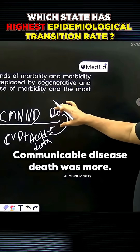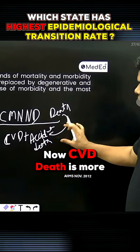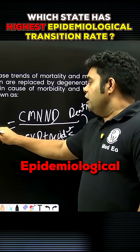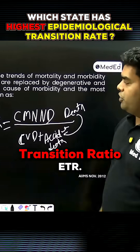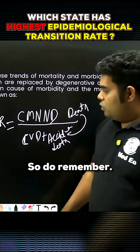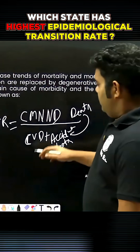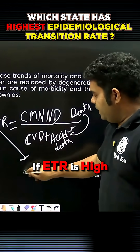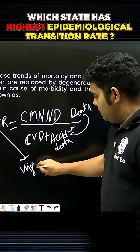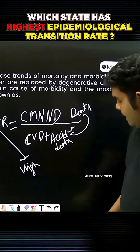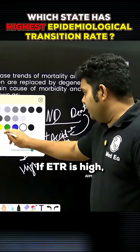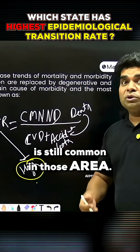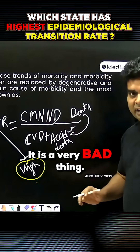Previously, communicable disease deaths were more; now CVD deaths are more. This shift is known as the Epidemiological Transition Ratio (ETR). If ETR is high, it means communicable disease is still common in those areas — which is a bad thing.